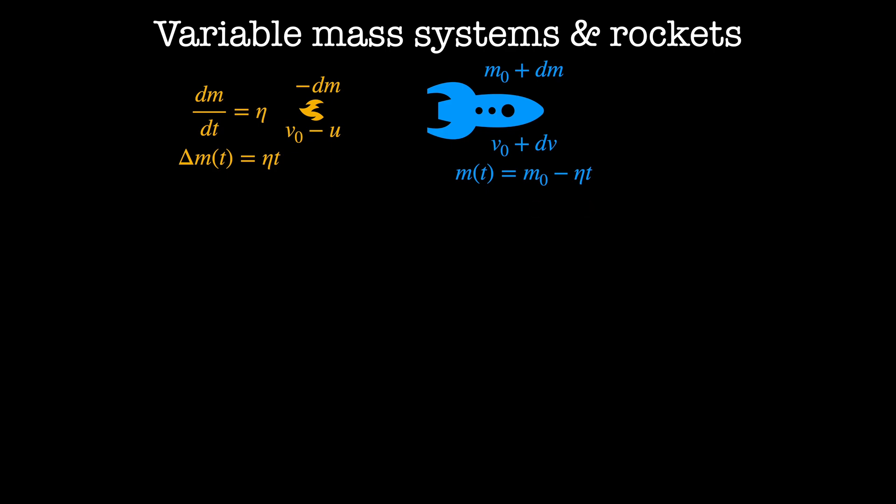We'll use conservation of momentum to see how the velocity of the rocket v has changed. The initial momentum is given by m times v, and you'll note that I'm using variables m and v and not the initial mass and initial velocity m-naught and v-naught, because using this analysis, I can compare any two consecutive instances in time and not just the first two. The final momentum has two components. The first is the momentum of the fuel, which is minus dm times v minus u, and the other is the momentum of the rocket, which is m plus dm times v plus dv.